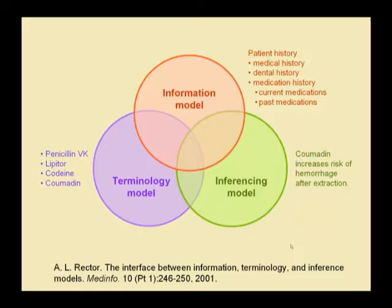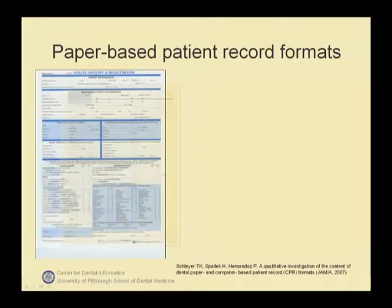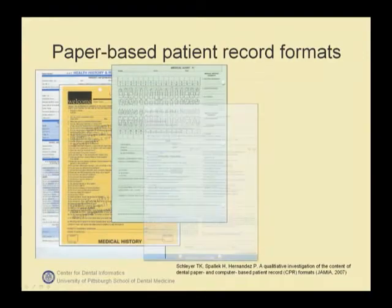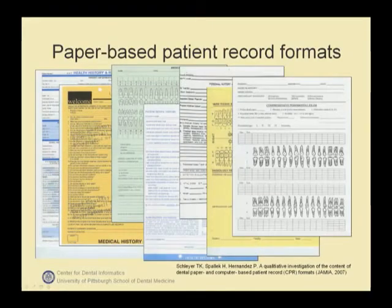To develop an information model for general dentistry we took several steps. First, we conducted a study of the format of paper and computer-based patient records. In that study we catalogued all fields of the records we examined, eliminated the duplicates, and called the resulting collection of fields the baseline dental record. We found two main things. One, aside from a few fields that occurred in almost all or all patient records, there was a lot of variation among the fields. Second, some fields that were very common in paper records, for instance the chief complaint, were very rare or absent in computer-based patient records.